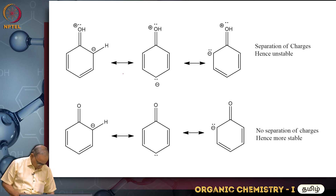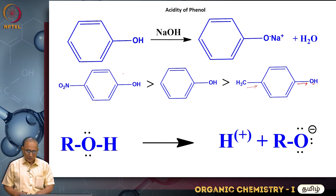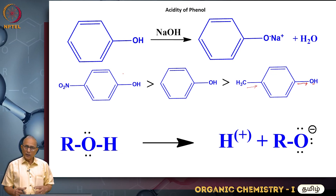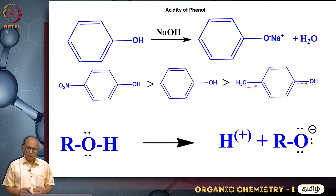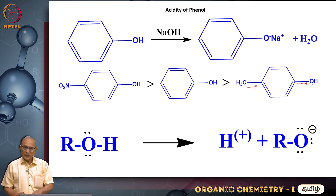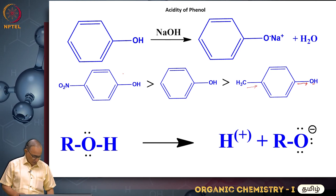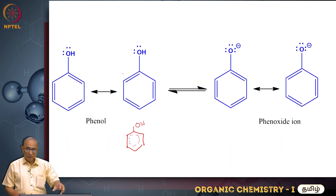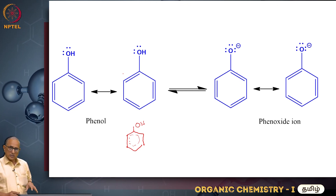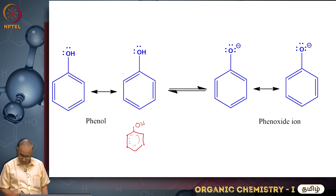If you look at the alcohol, in RO minus the negative charge on oxygen cannot delocalize into any of the carbons because those are all single bonds — a double bond is needed for resonance. The negative charge is concentrated on one atom, which is the least stable arrangement. At least in phenol you have resonance structures, whereas in alkoxide there are none. The alkoxide ion is the least stable, so hydrogen does not easily depart as H plus, and acidity is low.